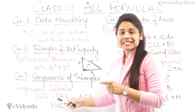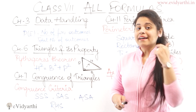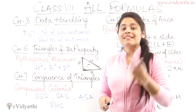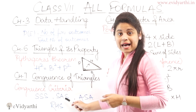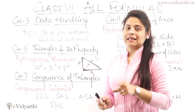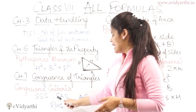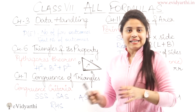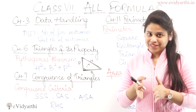Similarly, SAS — side, angle, side. You have two sides and one included angle. If you have two sides equal, then the two triangles are congruent.